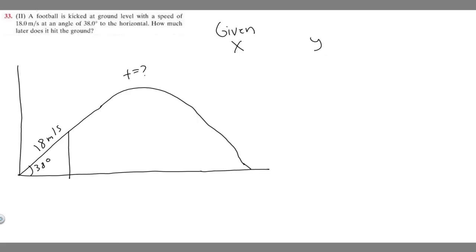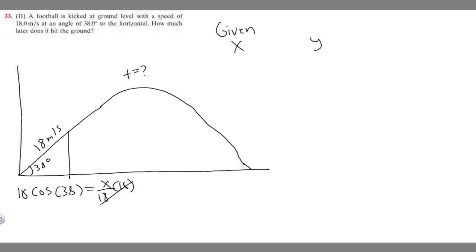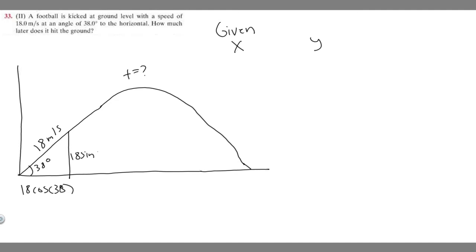The way we do that is using trig functions. The cosine of 38 degrees equals adjacent over hypotenuse, so that's x over 18, which gives us x equals 18 times cosine of 38 — that's the x component of initial velocity. Similarly, sine of 38 equals opposite over hypotenuse, so y over 18, which gives us 18 times sine of 38 for the y component.